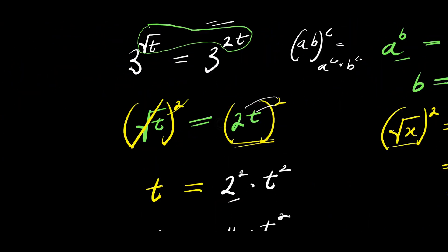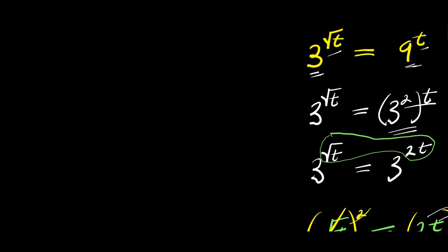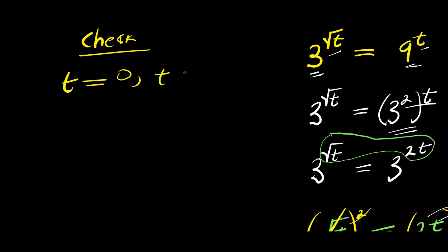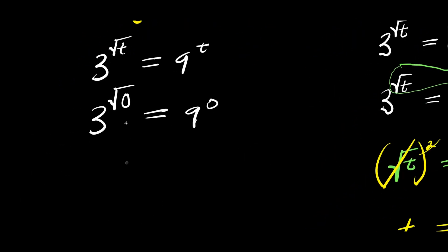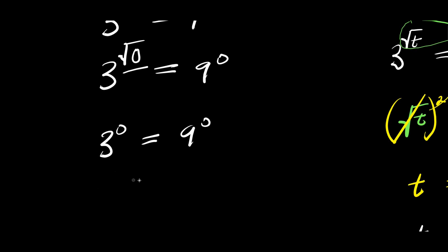The next step is to check each of the values we have. We have two solutions: t equals 0 and t equals 1 over 4. Our equation is 3 to the power of square root of t equals 9 to the power of t. If t equals 0, I get 3 to the power of square root of 0 equals 9 to the power of 0. Square root of 0 is 0, so I have 3 to the power of 0 equals 9 to the power of 0, and 3 to the power of 0 is 1, and 9 to the power of 0 is also 1. So t equals 0 is a valid solution.